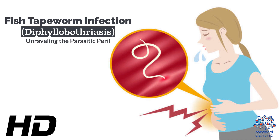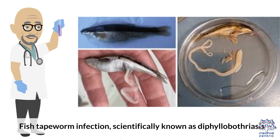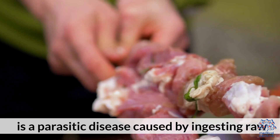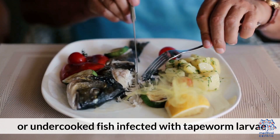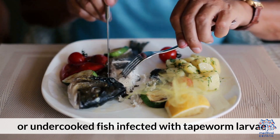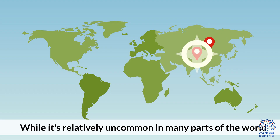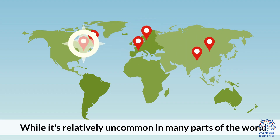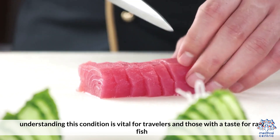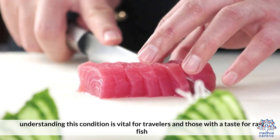Today's medical-centric topic is Fish Tapeworm Infection — Diphyllobothriasis: Unraveling the Parasitic Peril. Fish tapeworm infection, scientifically known as Diphyllobothriasis, is a parasitic disease caused by ingesting raw or undercooked fish infected with tapeworm larvae. While it's relatively uncommon in many parts of the world, understanding this condition is vital for travelers and those with a taste for raw fish.